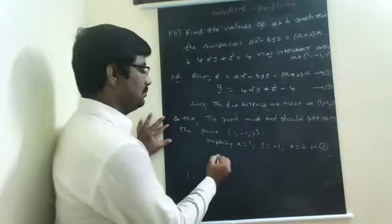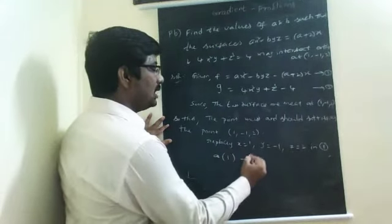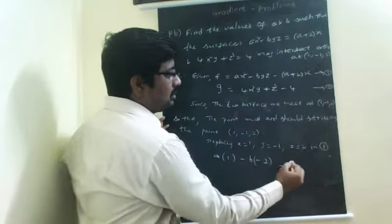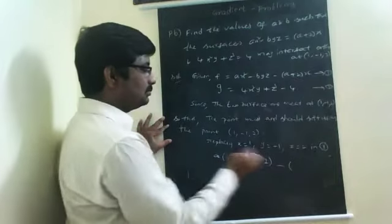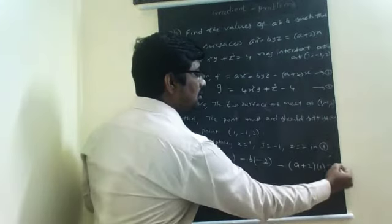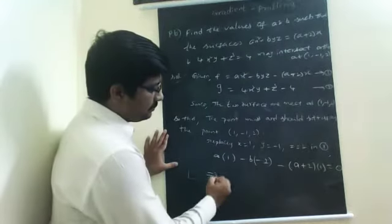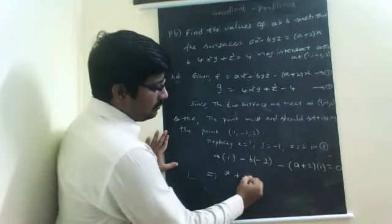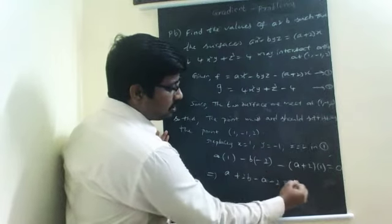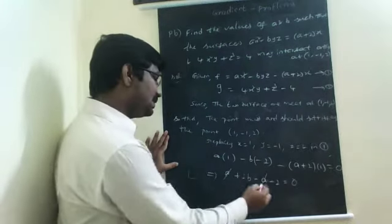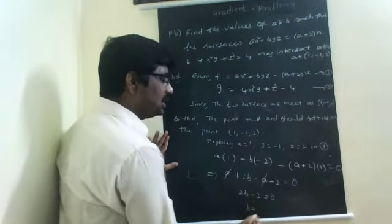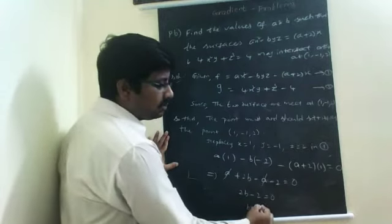We will get A into 1 squared minus B into y z, where y is −1 and z is 2, that is −2, minus (A plus 2) into x, where x is 1, equals 0. This implies A plus 2B minus A minus 2 equals 0. A gets cancelled, giving 2B minus 2 equals 0, so 2B equals 2.